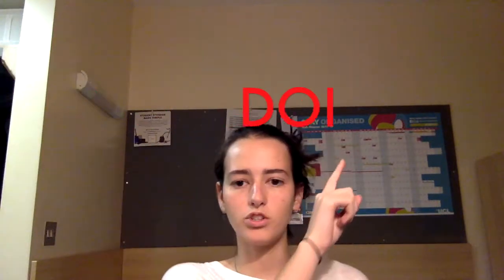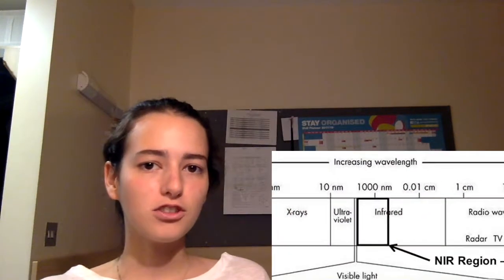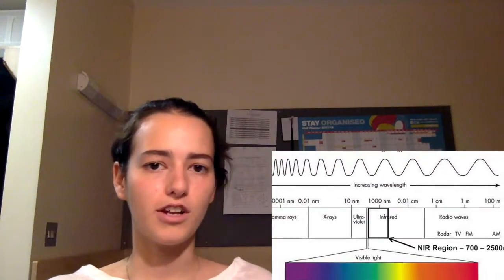Diffuse optical imaging, or DOI for short, is a technique that uses near-infrared light to take images of the body. Near-infrared light is basically just part of the electromagnetic spectrum.